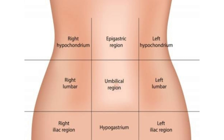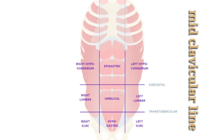The vertical line divides the abdomen into right, middle, and left sides, whereas the horizontal line divides it into upper, middle, and lower regions. The vertical lines are the mid-clavicular lines, taken from the midpoint of each clavicle.